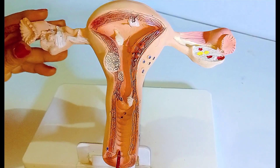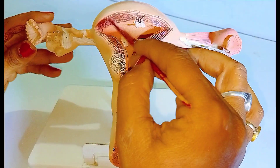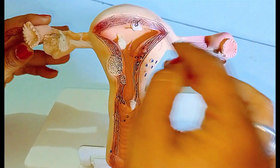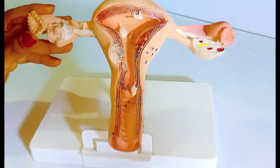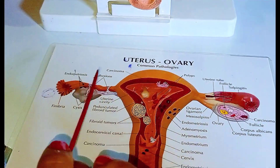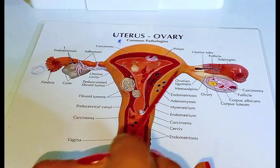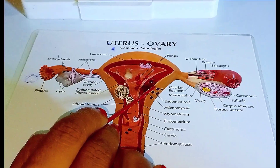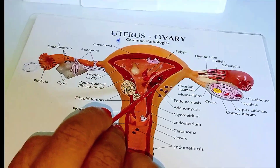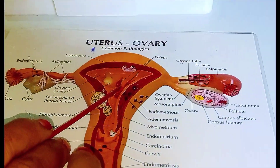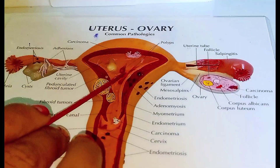Regarding the wall of the uterus, there are three layers. The first is the perimetrium, the second is the myometrium, and the third is the endometrium.